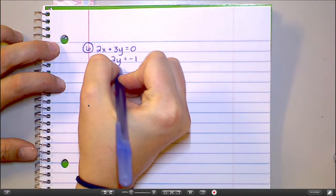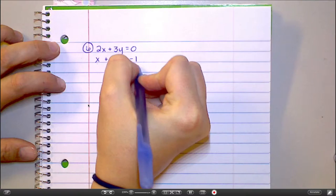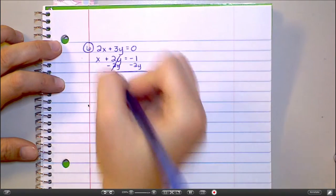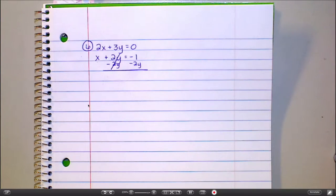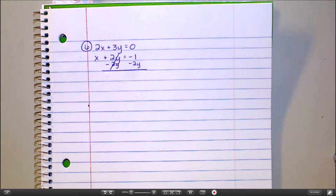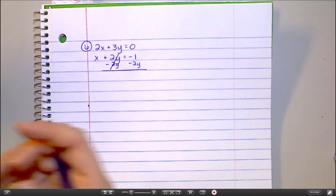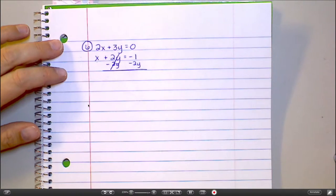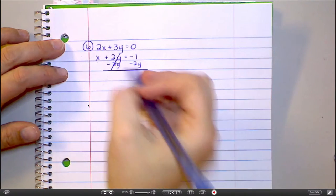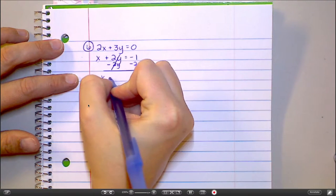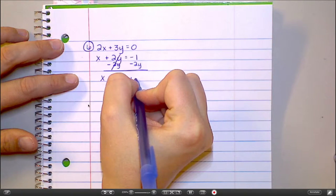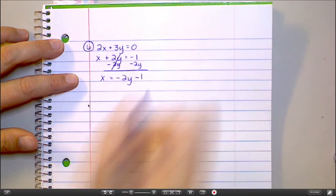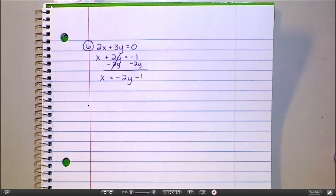I'm going to subtract 2y from each side. Does the bracket on the left mean anything? That's just telling you that that is a system of equations, like that you're solving those two together. So this I would now rewrite as x equals, and I don't care if you write this as negative 2y minus 1 or negative 1 minus 2y. It doesn't matter as long as the negative signs are in the right spot. But now I have what x equals.